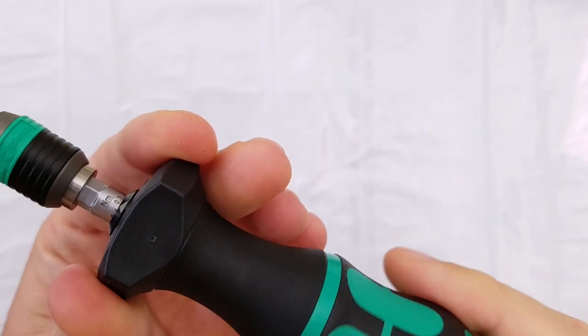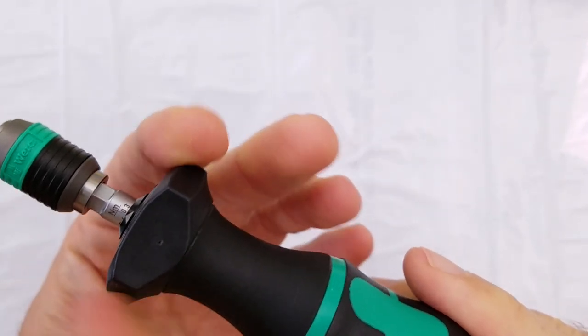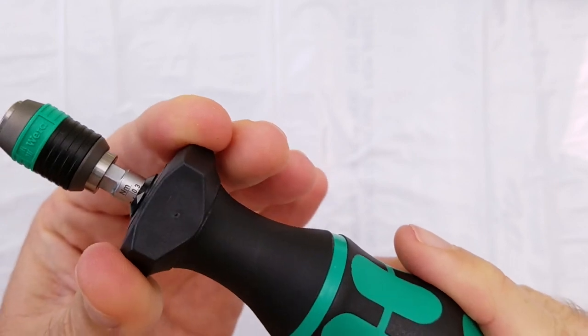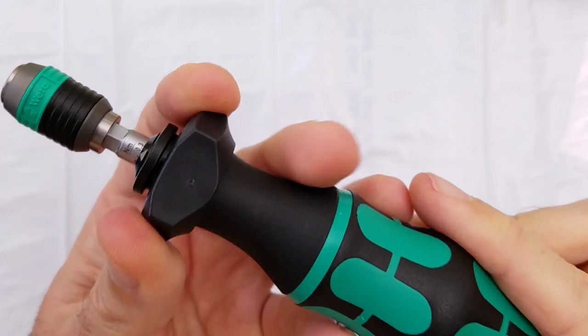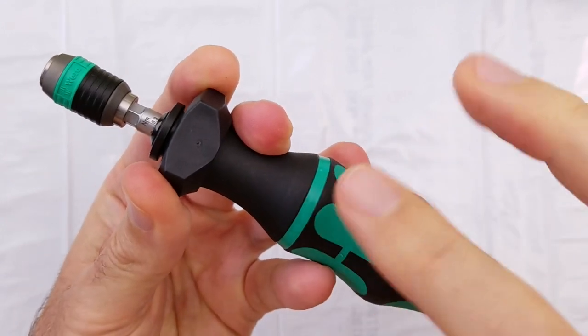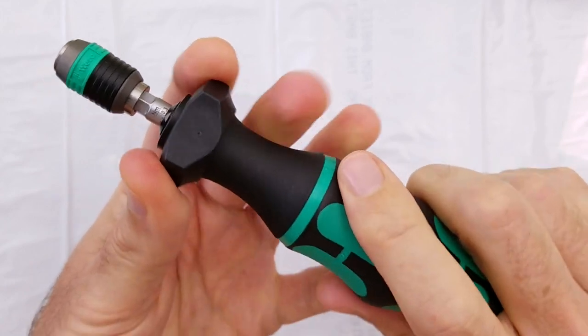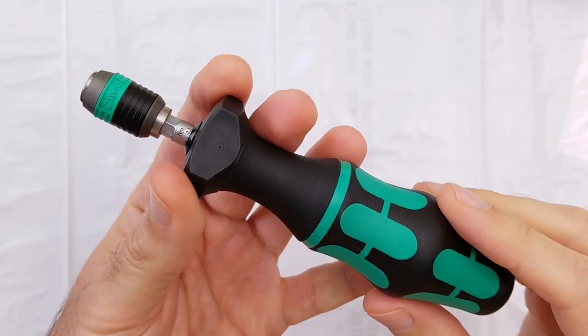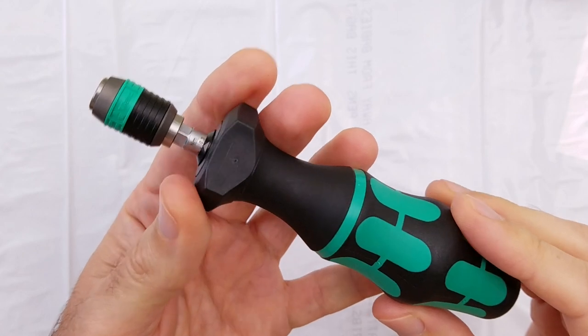You may need to rotate the main part of the handle while you're pulling back to get it to come back. And then, the next step is you rotate the main part of the handle. Rotating in the clockwise direction increases the torque setting.